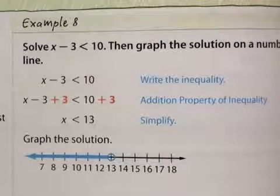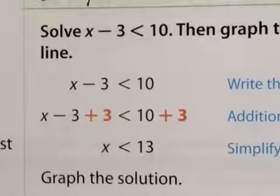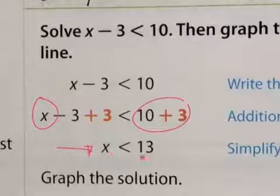The first thing we need to do is try to isolate this variable. To isolate the variable, we must get rid of the negative 3, so we add 3. Whatever we do to one side of the inequality, we have to do to the other side. So we add 3 and it gets rid of the negative 3, leaves us with just the x. And on this side, we add 3 to the 10, and we get 13. So x is less than 13.